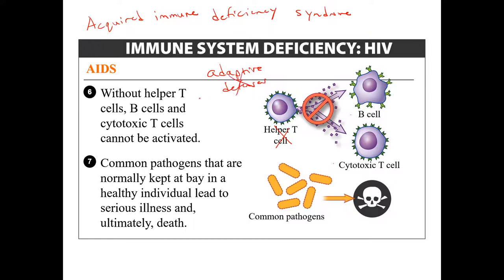Nobody dies from AIDS itself — AIDS doesn't kill people. What happens is secondary infections from common pathogens that most healthy individuals could fight off relatively easily become deadly because the adaptive defenses are gone. It's also important to note that you can't transmit AIDS from one person to another. HIV, the virus, can be transmitted — but AIDS cannot. AIDS develops in an individual due to HIV destroying the helper T cell population down to a very low level.